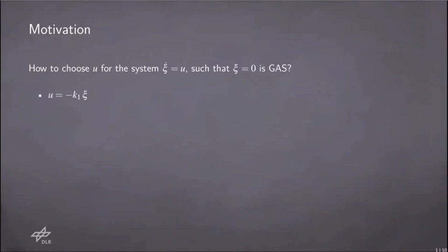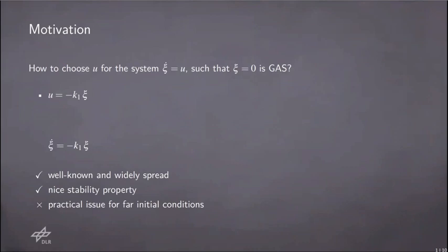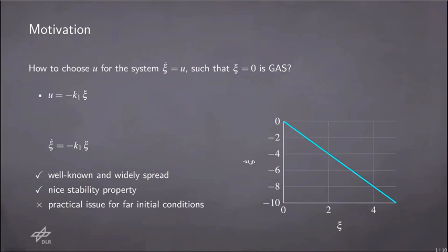A proportional action is a very popular choice in this case. It will lead to a linear time-variant system for which we know pretty much every single property. Still, since this is a proportional action, the control input will go pretty large if we start very far from the goal.